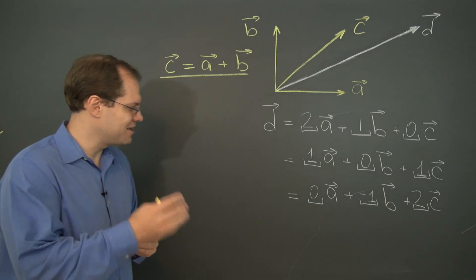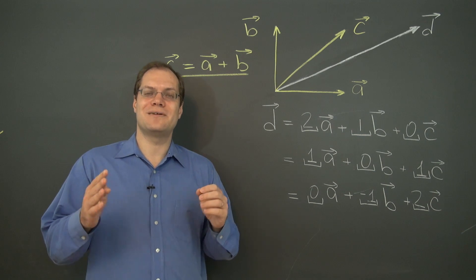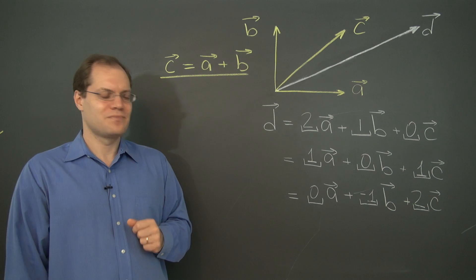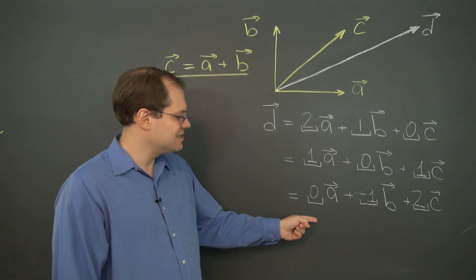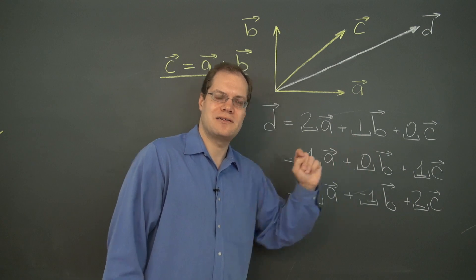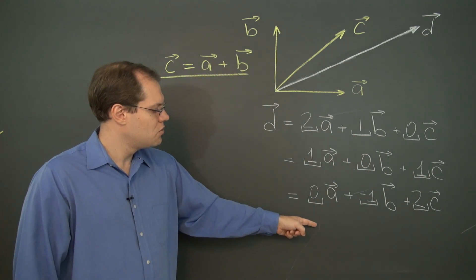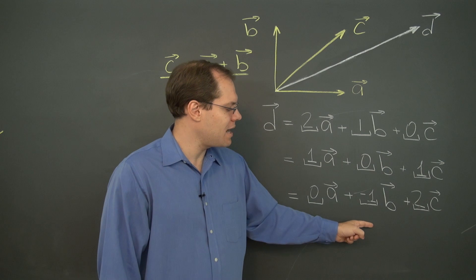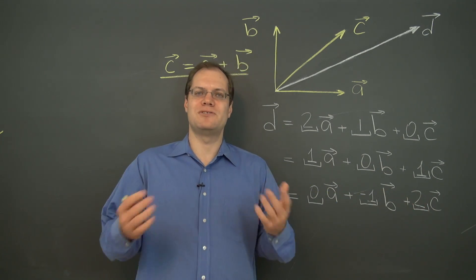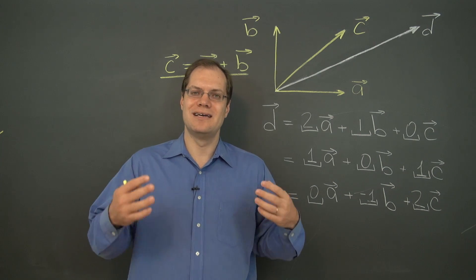And now that we've noticed this, we can easily come up with infinitely many linear combinations that will produce d. Let's just do it one more time. Take out one a, one b, and make up for it with another c. So minus a, minus two b, plus three c is most definitely, will once again be d.